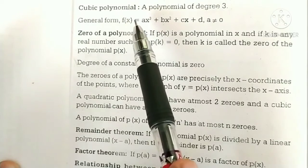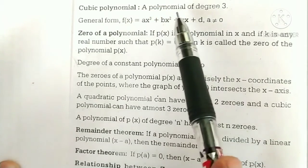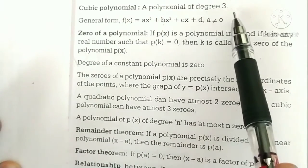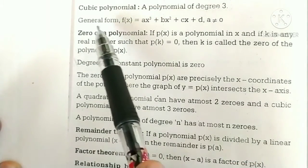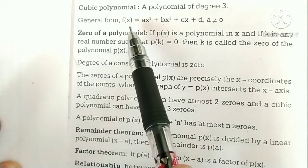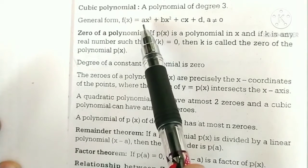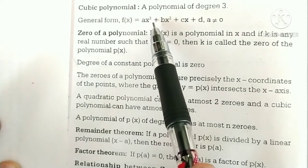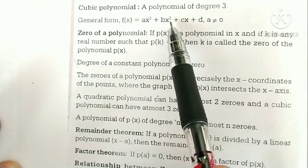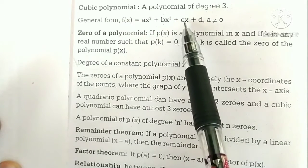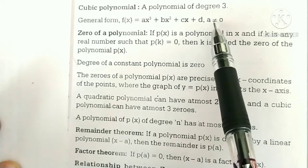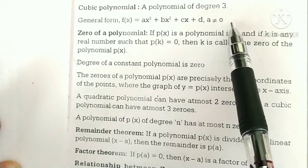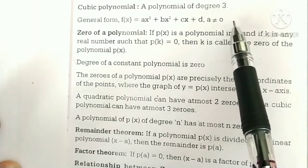Cubic polynomial: a polynomial of degree 3. General form: f of x is equal to ax cubed plus bx squared plus cx plus d, where a is not equal to 0.